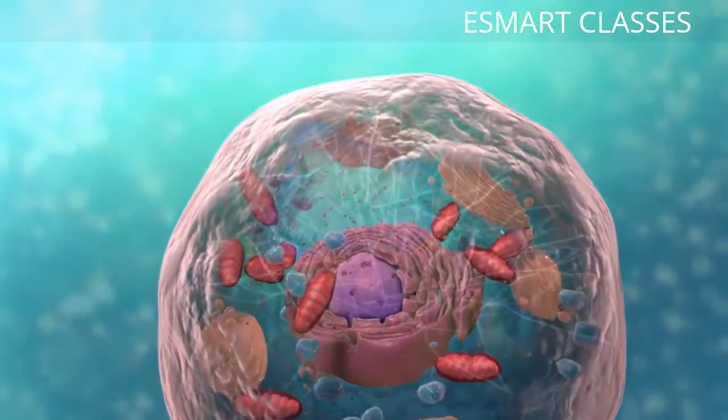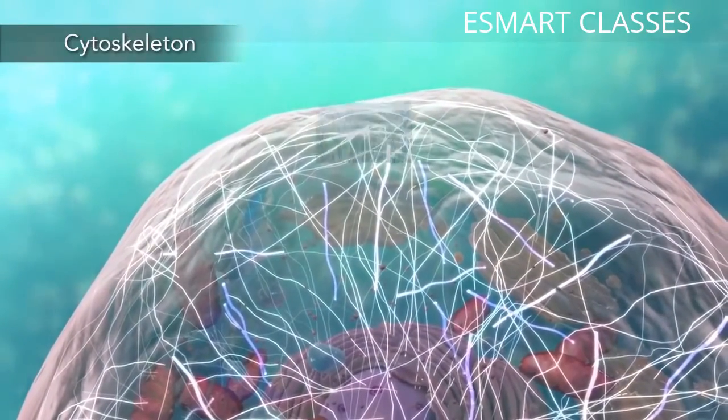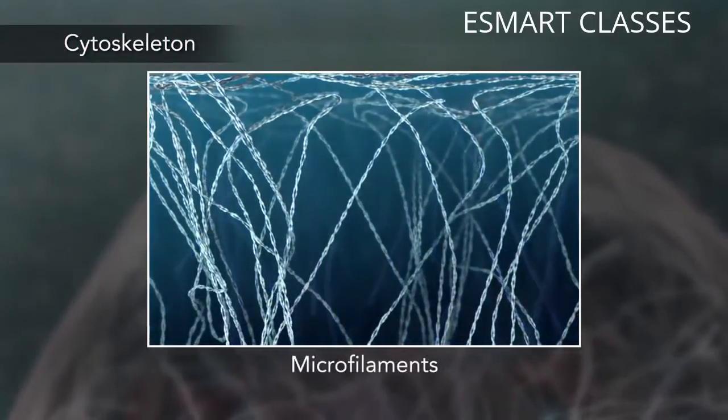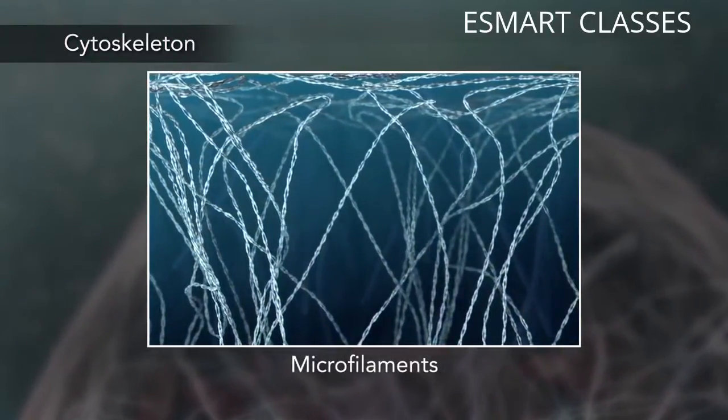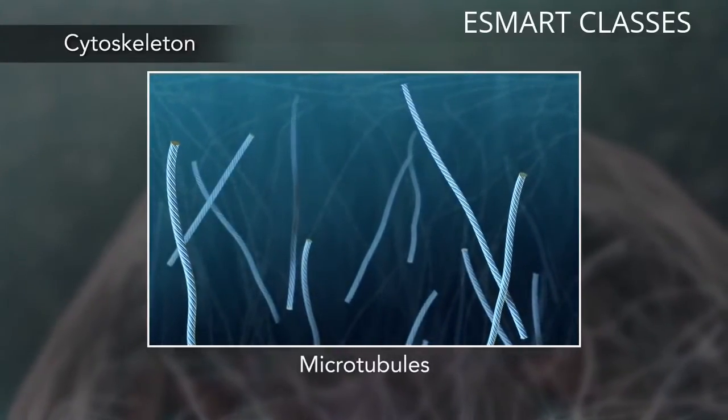Meanwhile, the cell maintains its shape through a cytoskeleton. The cytoskeleton includes the thread-like microfilaments, which are made of protein, and microtubules, which are thin, hollow tubes.